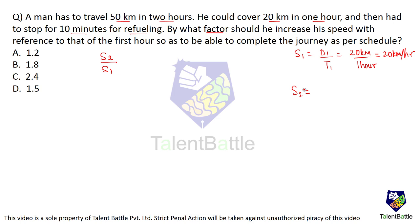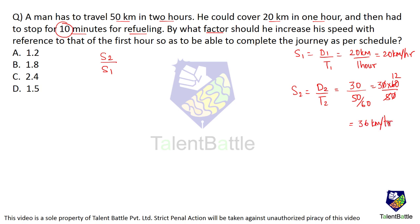Now for the second part: distance remaining is 30 kilometers, and time remaining is 50 minutes (10 minutes gone for refueling). Converting 50 minutes to hours: 30 × 60/50 = 36 km/h. The speed ratio is 36 upon 20, which comes out to 1.8. So the answer is option B — the factor by which he should increase his speed is 1.8, meaning the second speed has to be 1.8 times the first hour's speed.